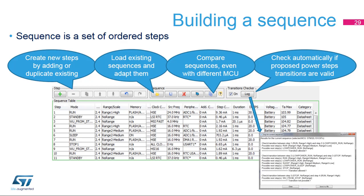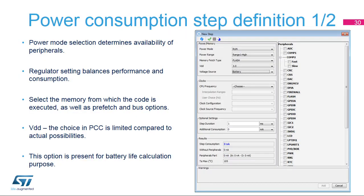Problematic steps are instantly highlighted in the sequence table — click Show Log to display a detailed explanation. The Compare feature displays a comparison of power and performance in the current scenario with a saved sequence; different configurations, including different MCUs, can be evaluated against each other. A Power Step can be added or edited in a dialog window. If the Transition Checker is enabled, it will preset the new step with allowed values. The Power Step is determined by several characteristics, with the power mode being the most important.